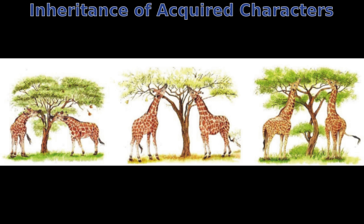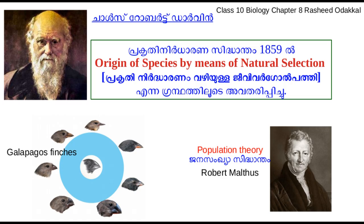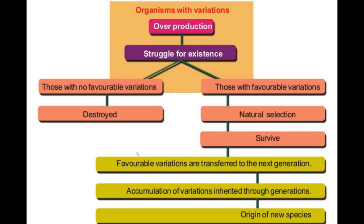Charles Darwin formulated his theory of natural selection on the basis of studies and long-term observations conducted on organisms in the Galapagos Islands. The differences in the beaks of Galapagos finches attracted him, as these finches had beaks adapted to their feeding habits. The population theory of Robert Malthus also influenced Darwin. According to the theory of natural selection, overproduction among species causes a type of competition called the struggle for existence. Only organisms with favorable variations survive in this struggle, while others are eliminated.